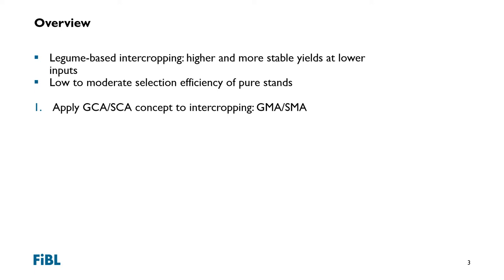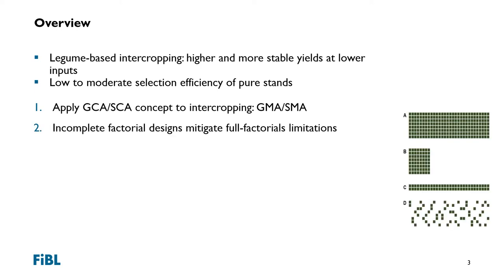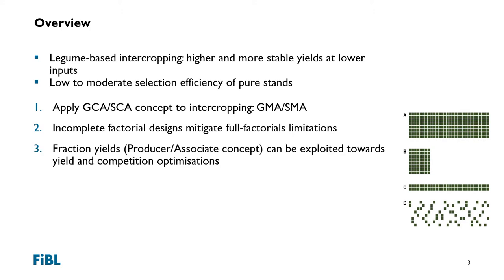I will apply concepts from hybrid breeding to intercropping, specifically general and specific combining ability. I will explore incomplete factorial designs to mitigate certain limitations of full factorials, look at fraction yields and how they can be exploited towards yield and competition optimization, and link plant traits to biological interactions to further improve mixed cropping systems.